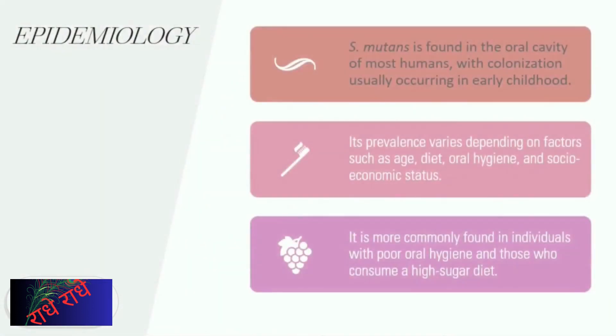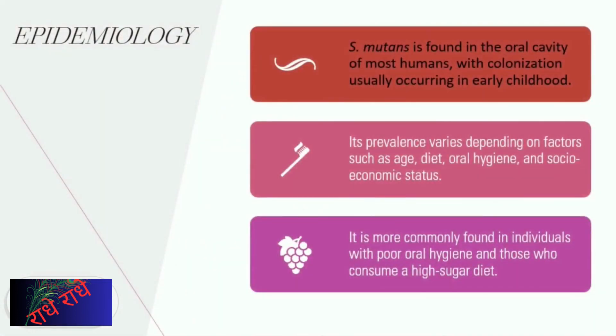Epidemiological studies show that Streptococcus mutans is widespread in the human population, particularly in children and those with poor oral hygiene who consume a high-sugar diet. Factors like oral hygiene, age, socioeconomic status, and diet have an influence on the prevalence of S. mutans, likely accounting for its higher frequency in individuals with inadequate hygiene or high-sugar diets.